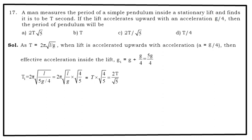So that turns out to be T·√(4/5), which is 2T/√5. So option C is the correct answer.